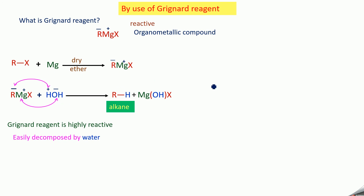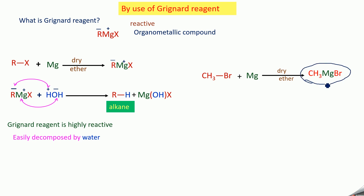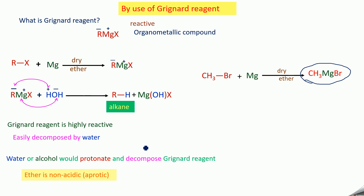For example, take CH₃Br (methyl bromide) on treatment with magnesium in dry ether — you get CH₃MgBr, methyl magnesium bromide, which is the Grignard reagent. Dry ether must be used because it is non-acidic (aprotic). If you use water or alcohol, they are acidic, they will protonate and decompose the Grignard reagent. So only dry ether must be used for preparing Grignard reagent.